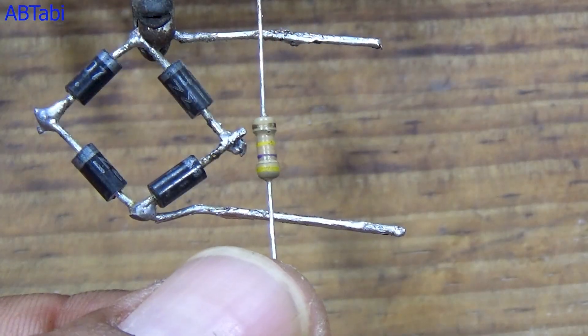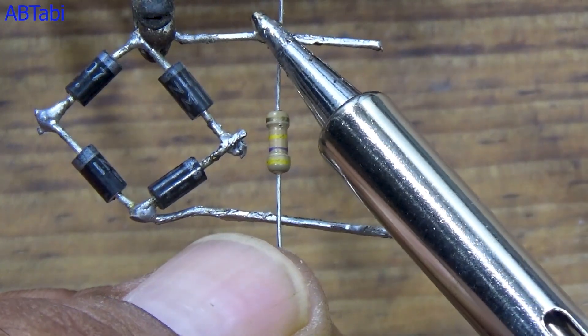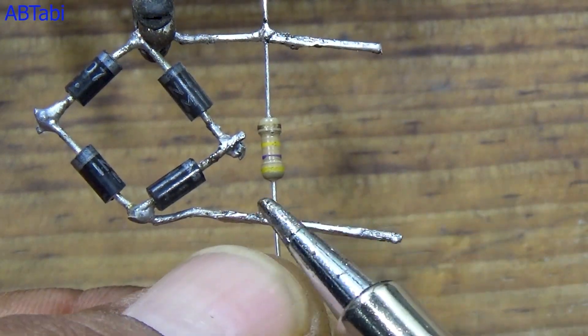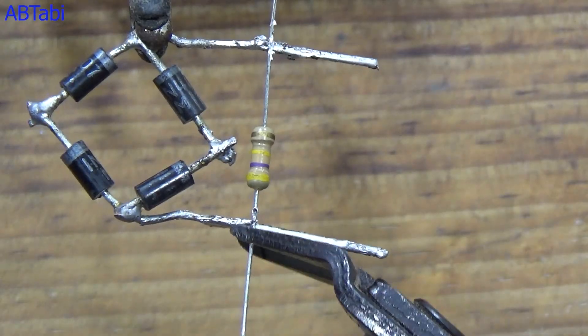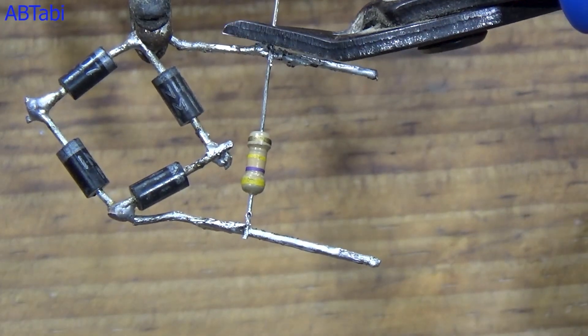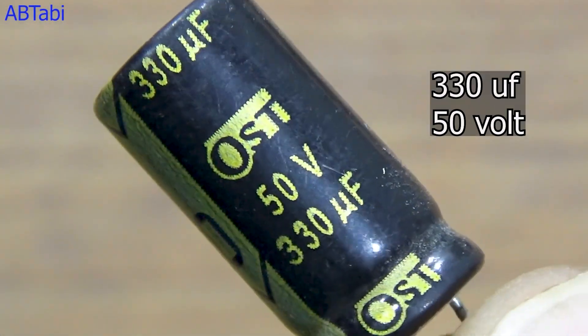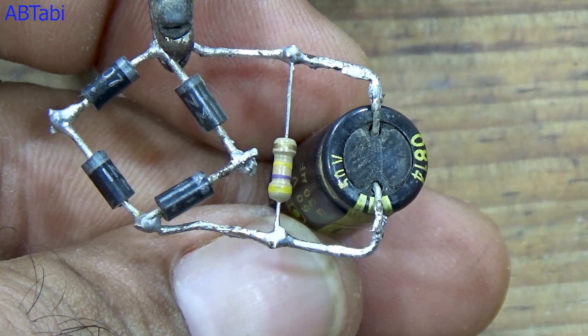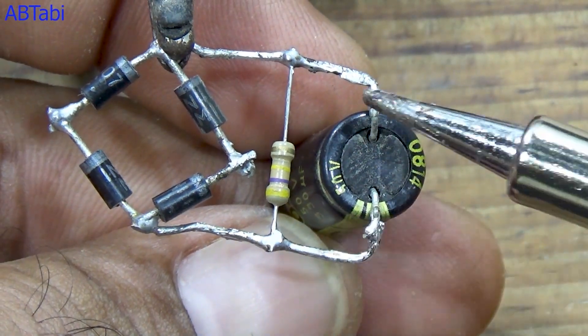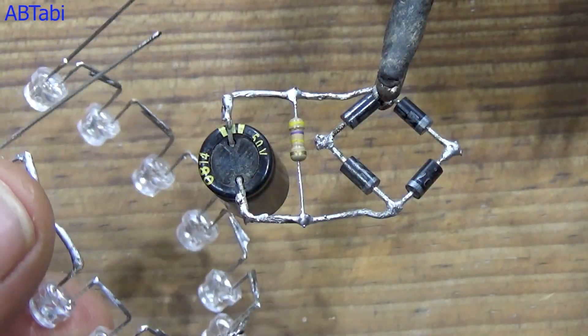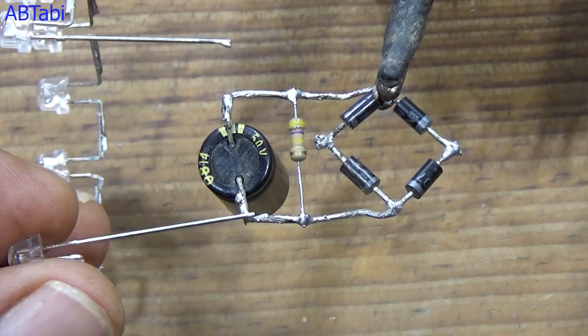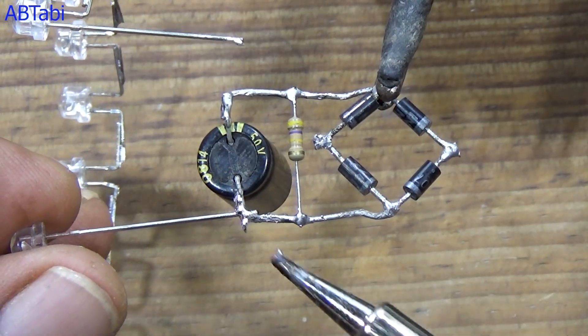All components are easily available and commonly used in LED bulb circuits. The AC input is first converted into DC using the 4007 diode bridge. The capacitor limits the current and helps reduce voltage. The resistor provides safety and discharges the capacitor when power is off. The DC output is filtered using the electrolytic capacitor, and finally, the LEDs light up smoothly.